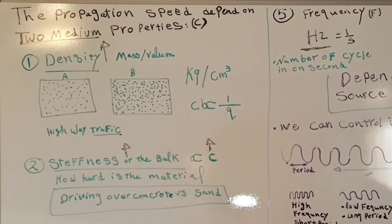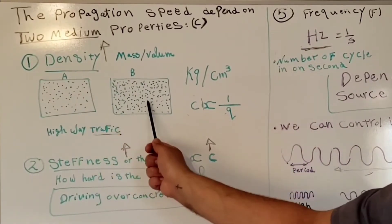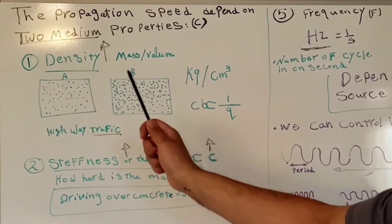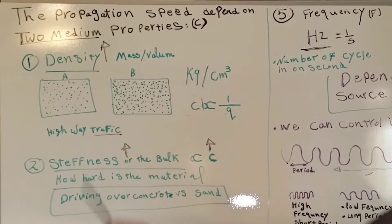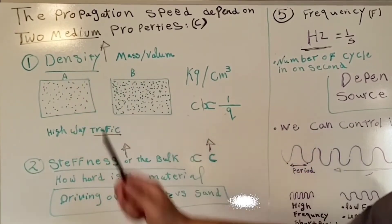If you look at these two materials, which one has more density, A or B? As you see here, we have more dots here, and that means this material is more dense.